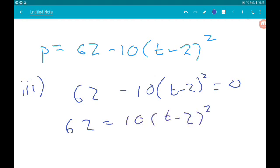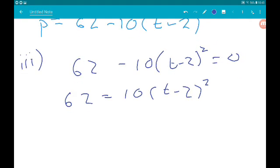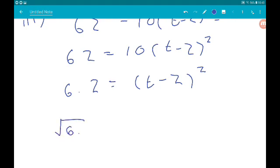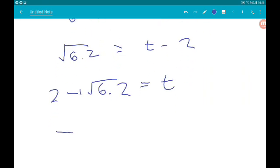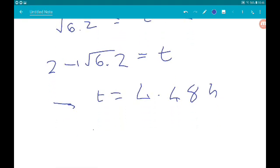Divide by 10. We get 6.2 is equal to t minus 2 squared. Square root both sides, we get root 6.2 is equal to t minus 2. Add 2. 2 add root 6.2 is equal to t. Smash that in your calculator and we get t is 4.48. Multiply 0.48 by 60 to get the number of minutes. So it's going to be 4 hours 29 minutes.